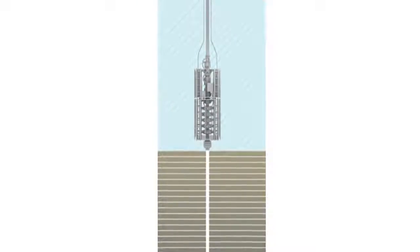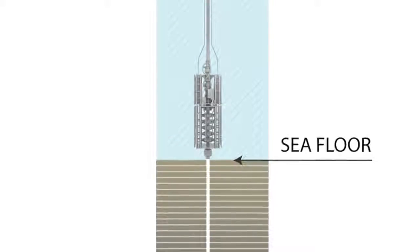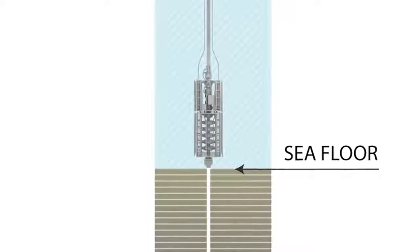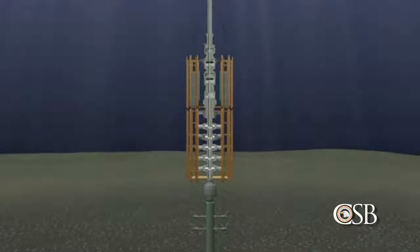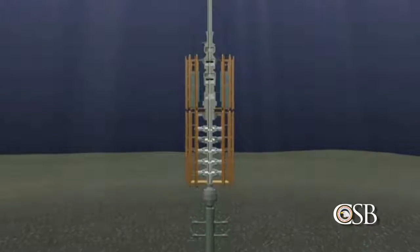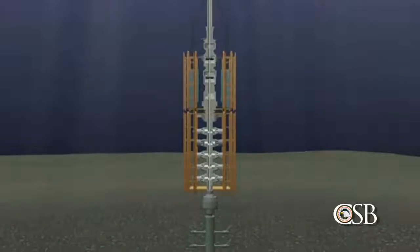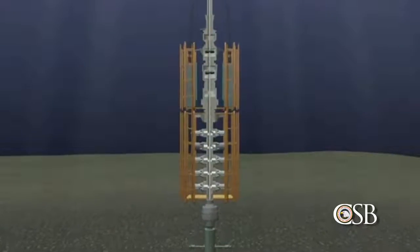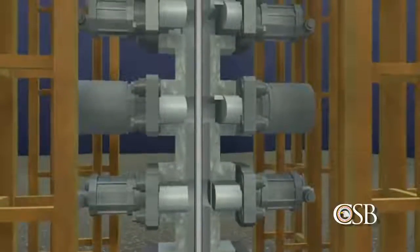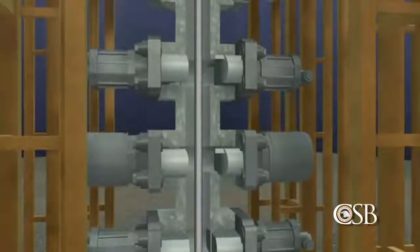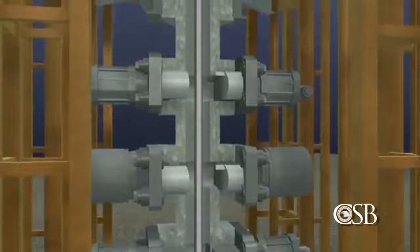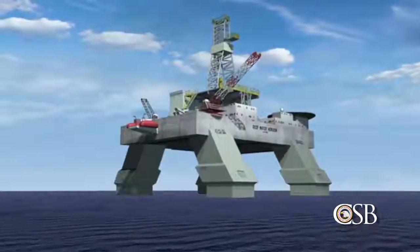This equipment is called the blowout preventer, or BOP. The BOP is a complex, electrically and hydraulically powered device that is essential for controlling the well and, in an emergency situation, preventing a disaster on the platform high above on the sea surface. The BOP is connected to the rig by a large diameter pipe called a riser.